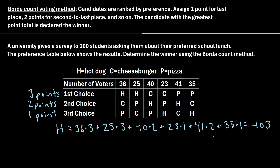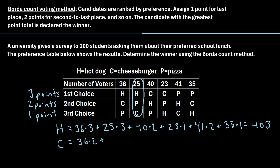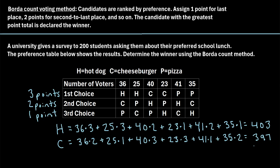Now we repeat this process for cheeseburger. Going through each column: in the first column, cheeseburger was chosen second, so for those 36 votes cheeseburger gets 36 × 2 points. In the next column, cheeseburger was chosen last, so for those 25 votes it gets 25 × 1 point. Continuing this process through each column, cheeseburger ends up with a total of 397 points.